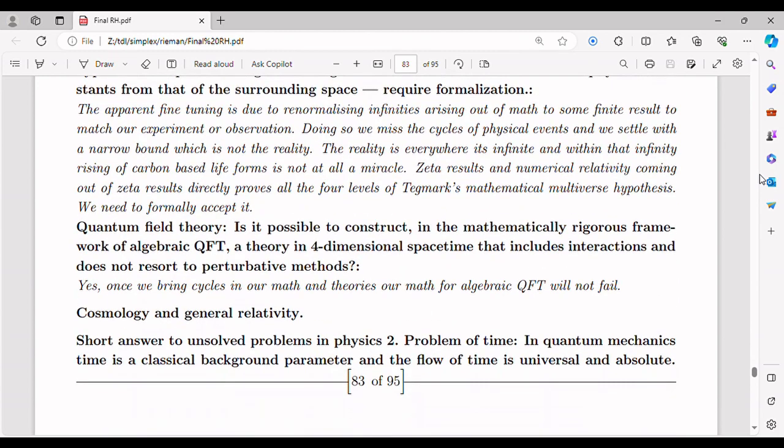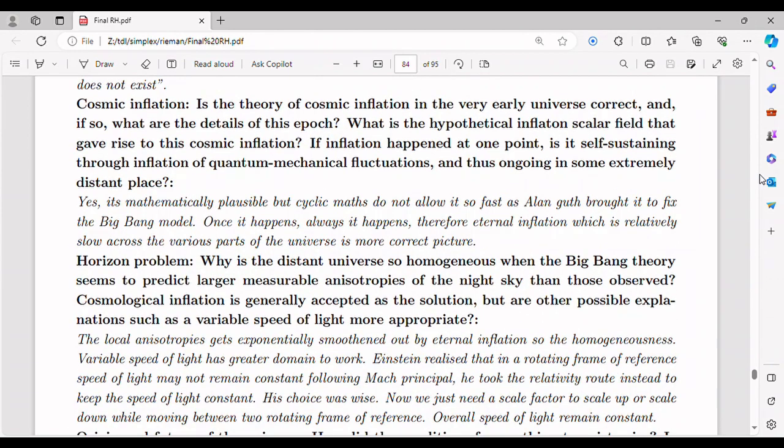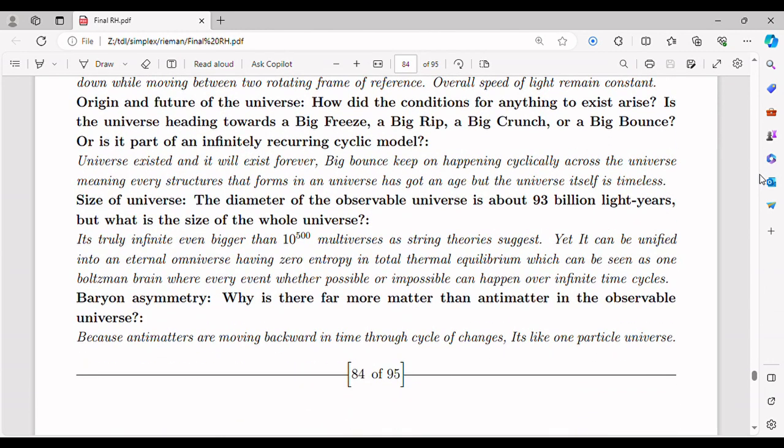Let's consider the problem of the infinitude of prime pairs, also known as the twin-prime conjecture. The conjecture states that there are infinitely many prime numbers that differ by 2, such as 3 and 5, 11 and 13, 17 and 19, and so on. To approach this problem using the prime number theorem and the dual nature of numbers, we can utilize probabilistic arguments and the statistical properties of primes.